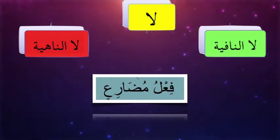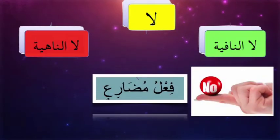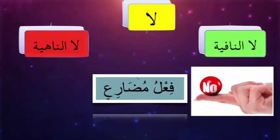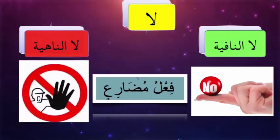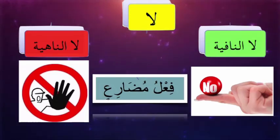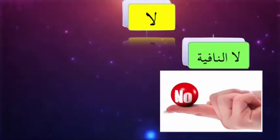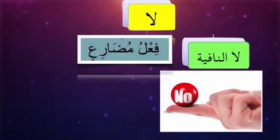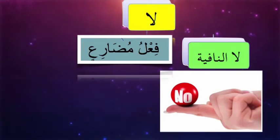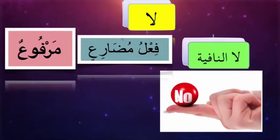Lā Nāfiya is negation — where you negate a sentence. It is used with Jumlatul Fi'liyya where you negate the sentence. So what is Lā Nāhiya then? Lā Nāhiya is to forbid or to stop from doing an action. That's the difference between Lā Nāfiya and Lā Nāhiya. When Lā Nāfiya is used with Fa'al Mudari', we are saying 'no' — and this Lā has no effect on the Fa'al Mudari' which comes after it. That means the Fa'al will remain in its natural form, which is Marfu'.